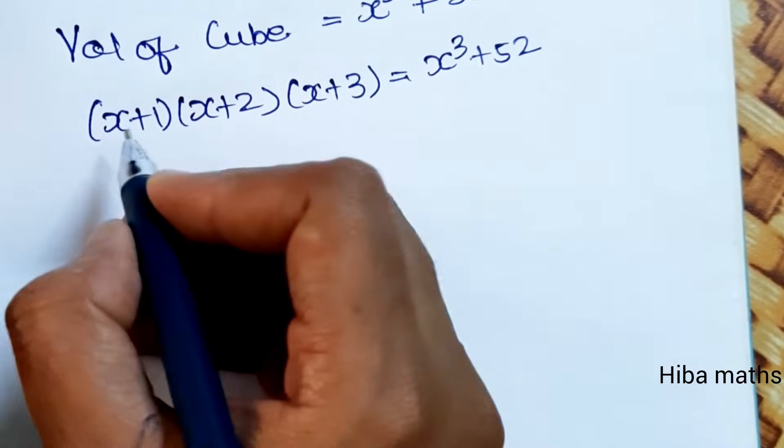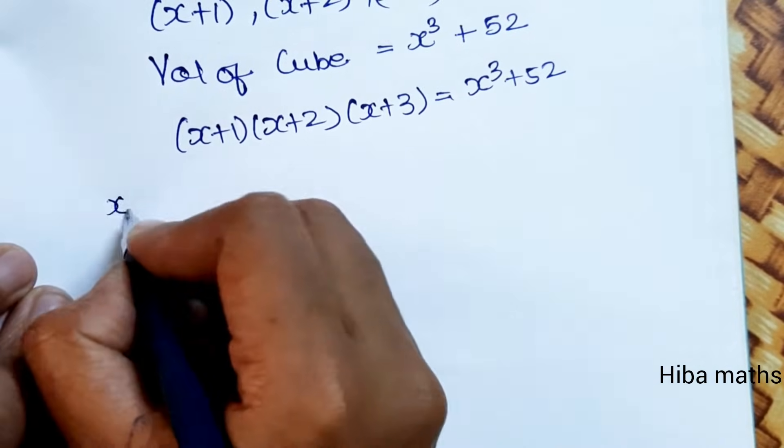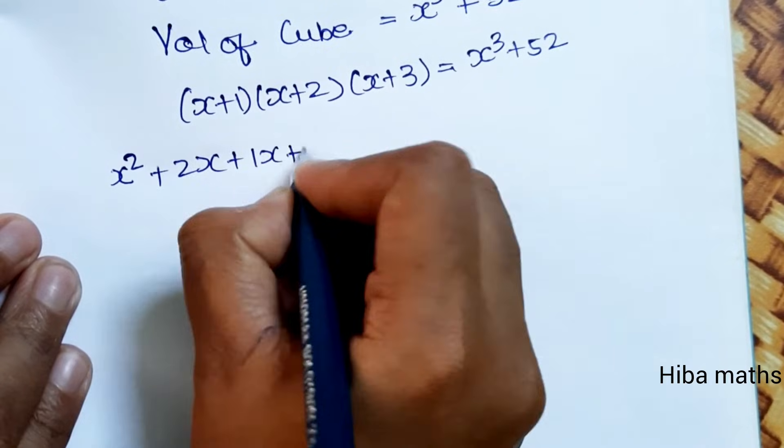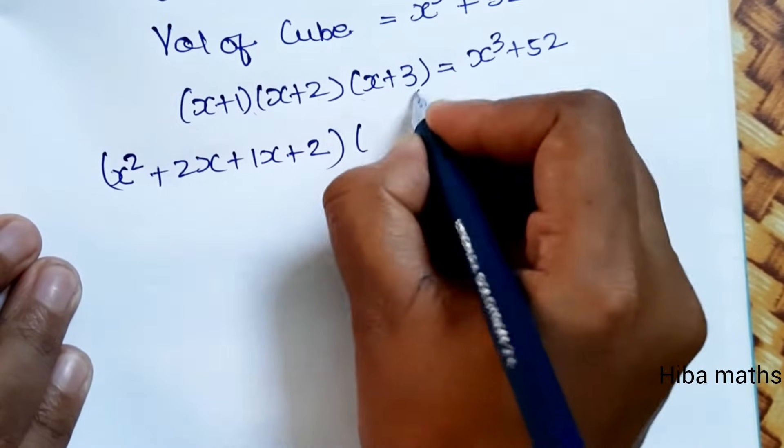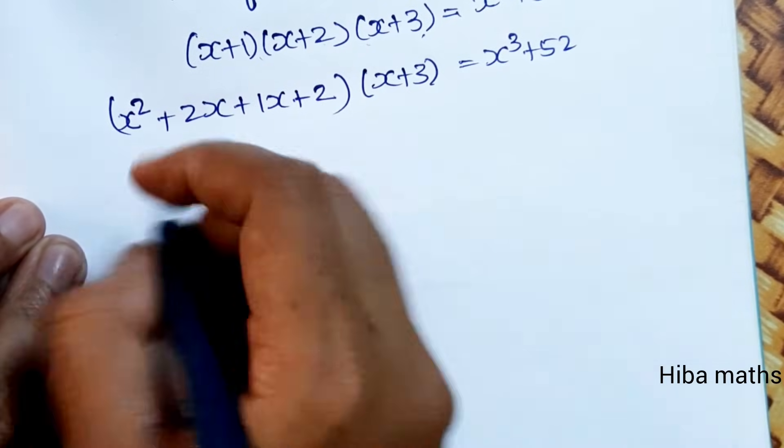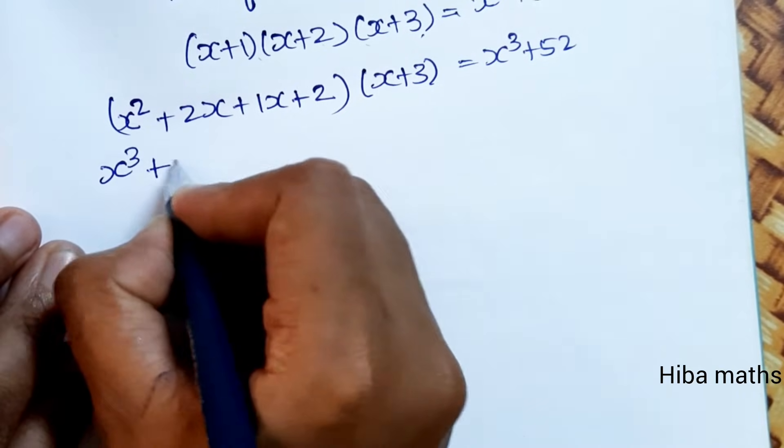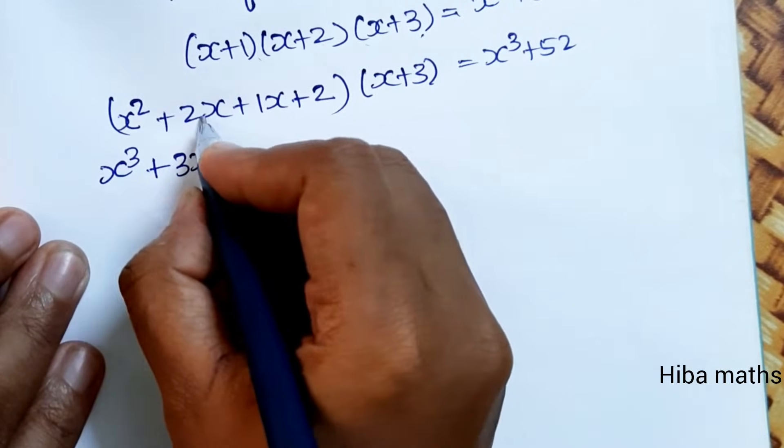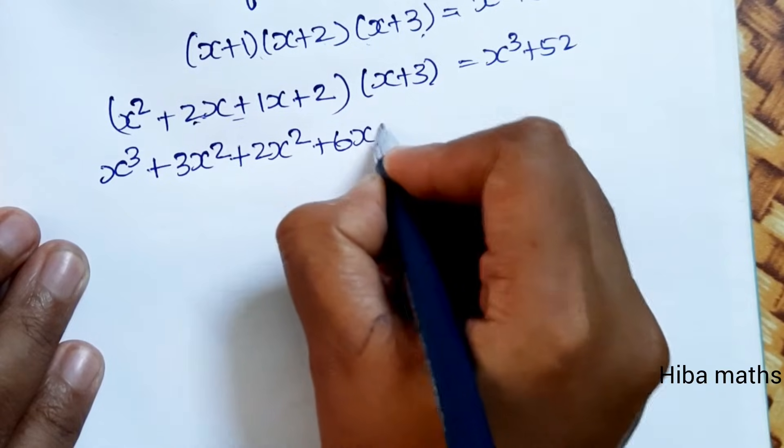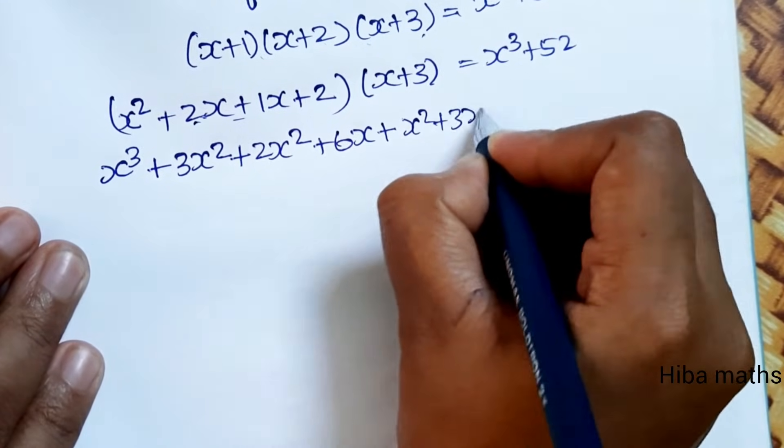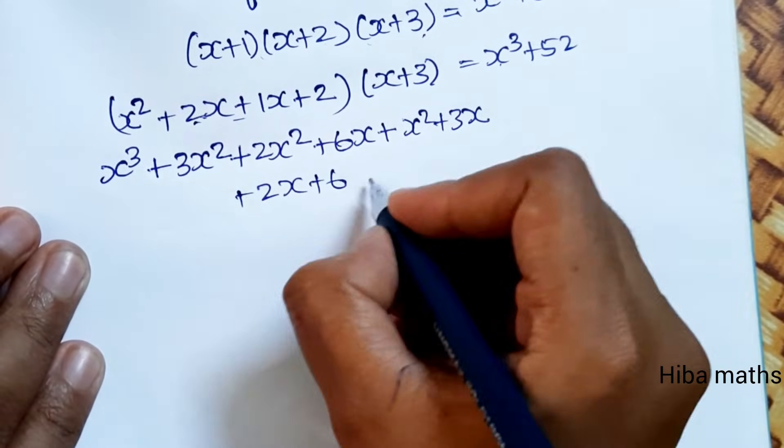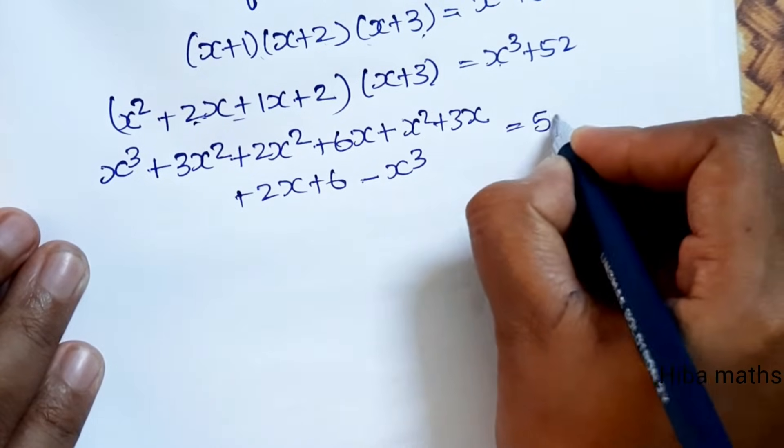Now expanding, x plus 1 times x plus 2 times x plus 3. First x plus 1, x plus 2 gives x squared plus 3x plus 2, then times x plus 3. This gives x cubed plus 2x squared plus 3x plus 6x plus x squared plus 3x plus 2 times x plus 6.